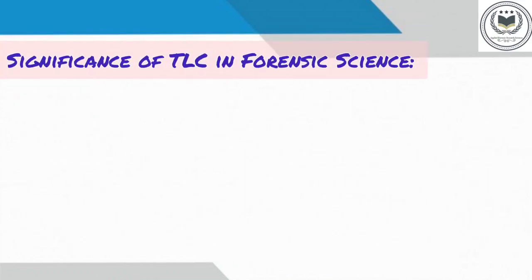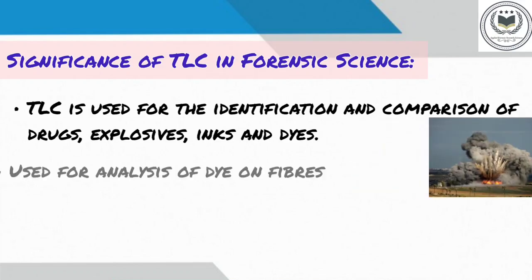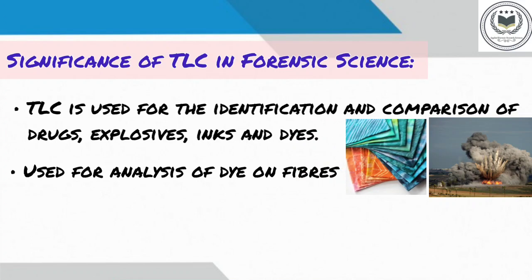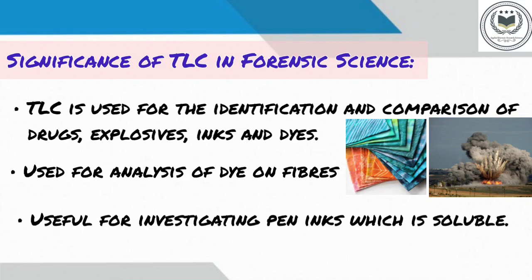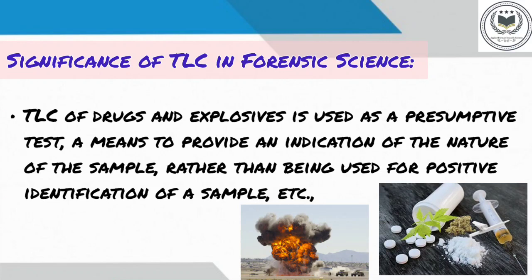Significance of thin layer chromatography in forensic science: Thin layer chromatography is used for the identification and comparison of drugs, explosives, inks and dyes. It is used for the analysis of dyes on fibers — for example, from a piece of clothing, the dye must be removed from the fiber into a solvent which can then be applied to the TLC plate. It is also used for the investigation of pen inks which are soluble. TLC of drugs and explosives is used as a presumptive test, a means to provide an indication of the nature of the sample rather than being used for positive identification of a sample.